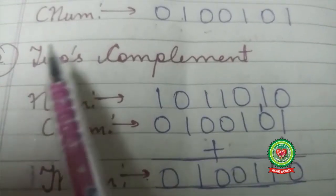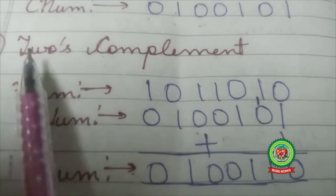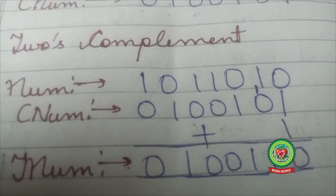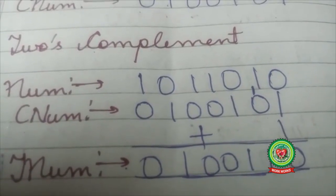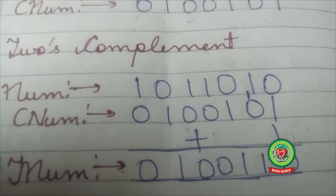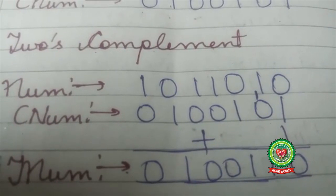Let us understand what is two's complement. Two's complement means we will calculate one's complement of a number, then we will add 1 to that number. It will give you two's complement of a number.